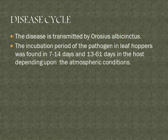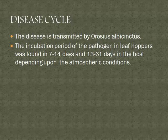The disease cycle: the disease is transmitted by Oroceus albicynctus (leafhopper). The incubation period of the pathogen in leafhoppers was found to be 7 to 14 days, and 13 to 61 days in the host plant. Depending upon the atmospheric conditions, the pathogen completes its life cycle accordingly.